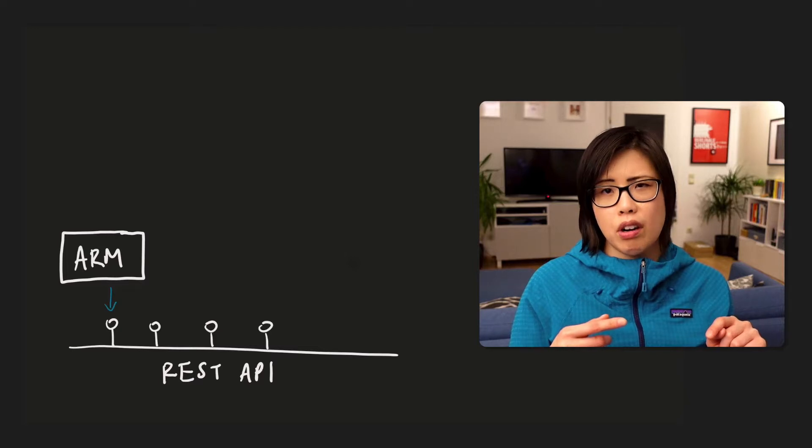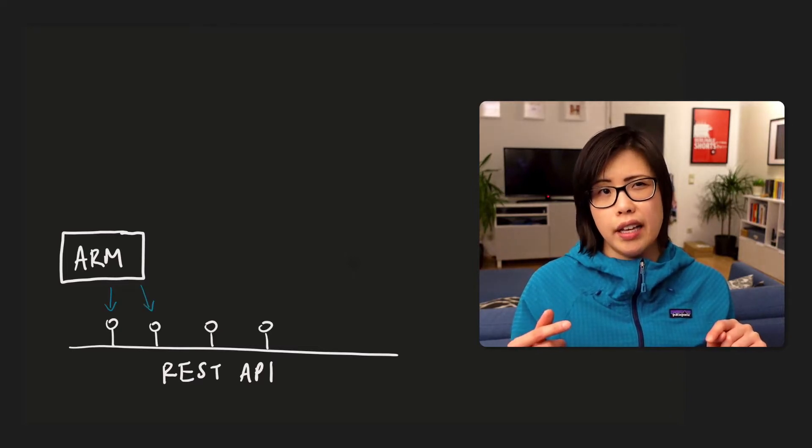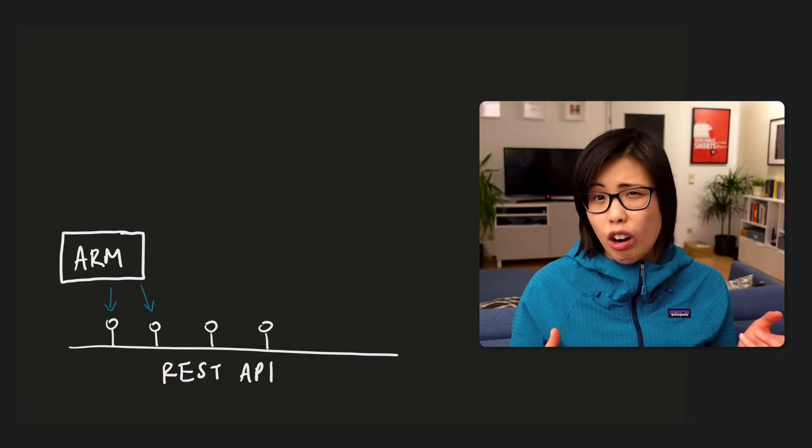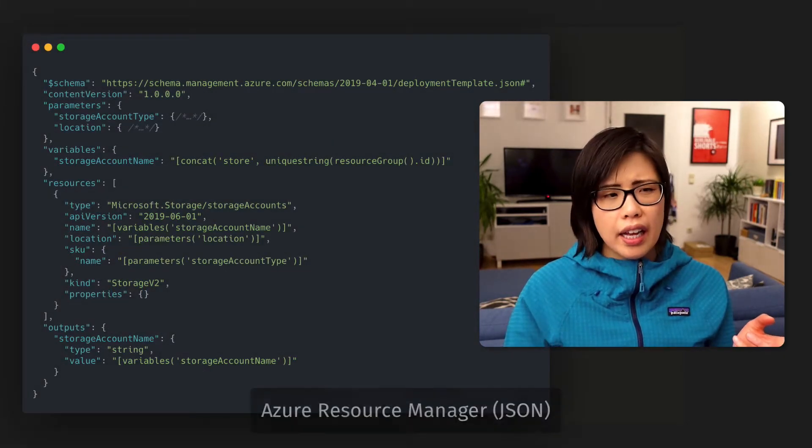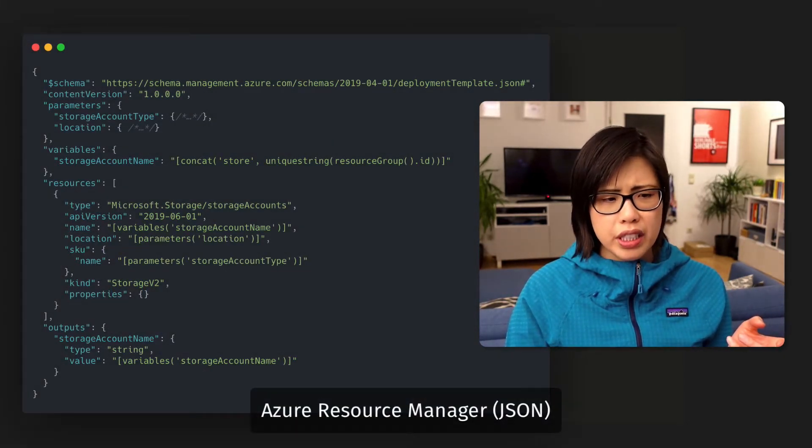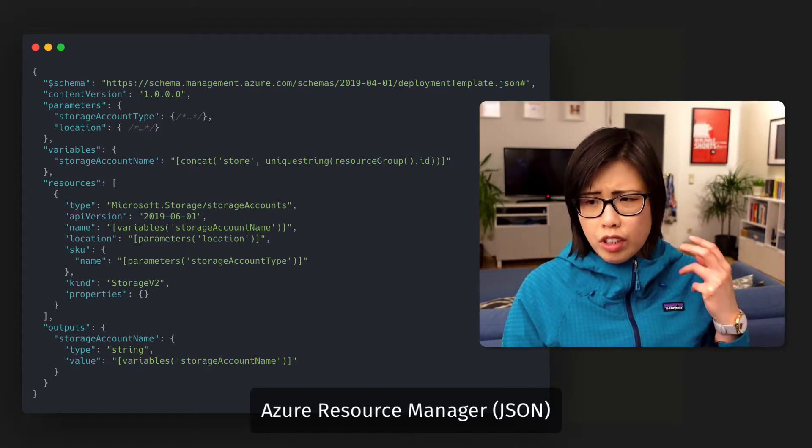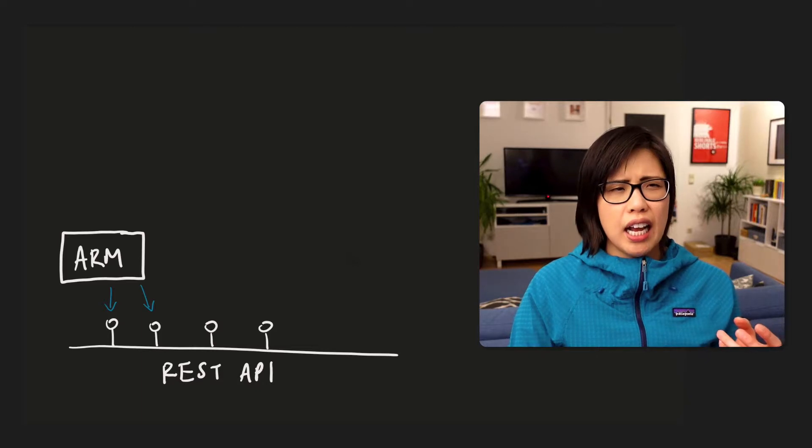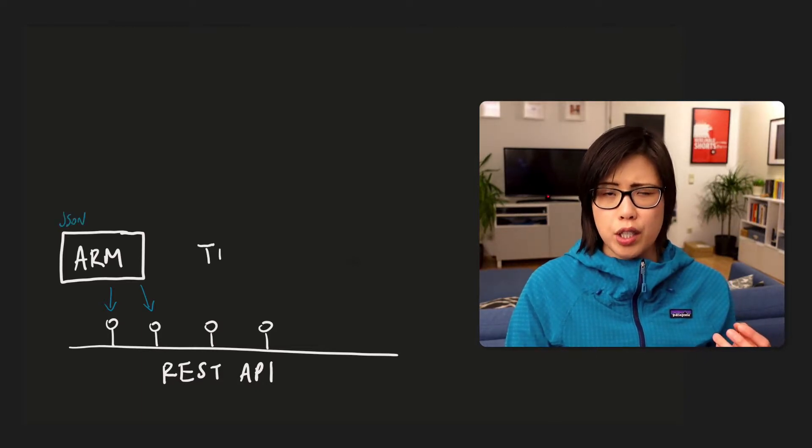So ARM templates are JSON templates, and the JSON is readable. I can read ARM, but I can't write ARM. And that's because ARM really is for machines. It's JavaScript object notation. And that was one of the reasons why I was actually attracted to Terraform.